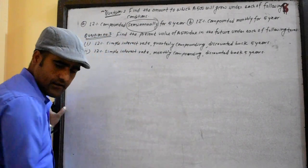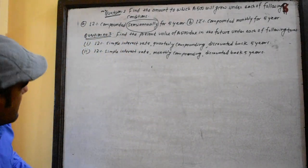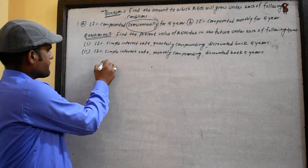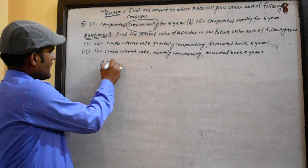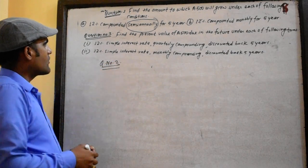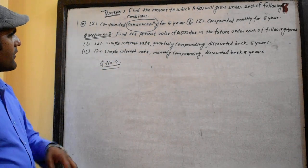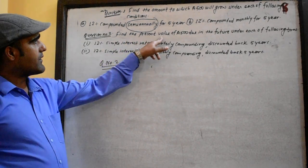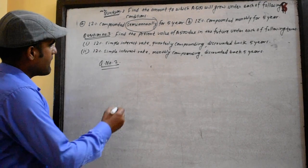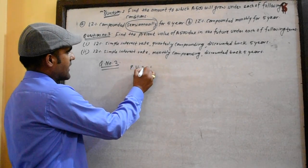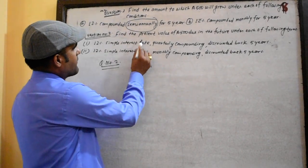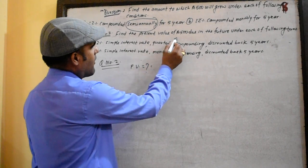Question number 2: find the present value of an amount due in the future, under each of the following terms.